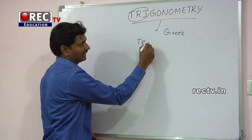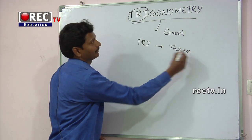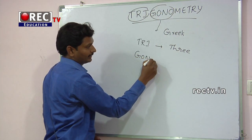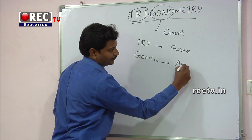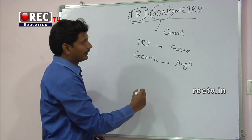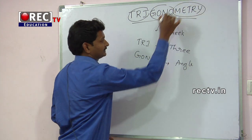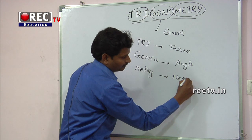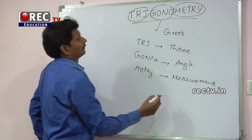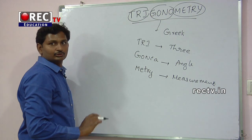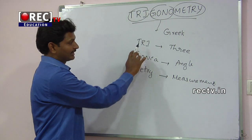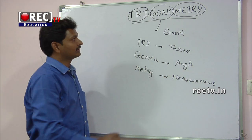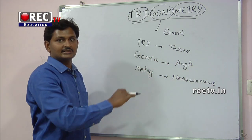The first word is 'tri' — T-H-R-E-E — meaning three. The second word is 'gonia' — G-O-N-I-A — meaning angle. And the last one is 'metri' — M-E-T-R-I — which is short for 'metron,' meaning measurement.